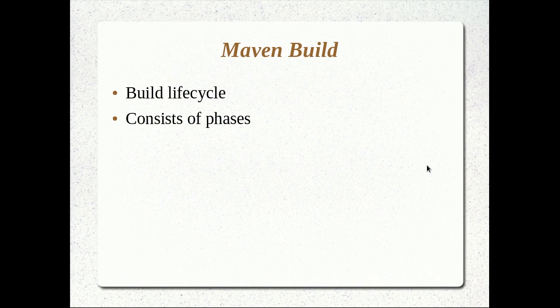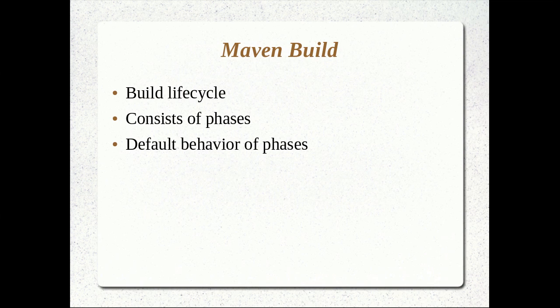Maven has an internal build lifecycle itself. The build lifecycle has been split into different phases. Compile is a build phase and test is a build phase. All these phases together comprise the build lifecycle in Maven, and if you do not explicitly configure it, Maven chooses the default build lifecycle. We actually saw that in action when we did mvn compile or when we did mvn package. Some of the phases have default behavior. Compile takes the code in the main directory and compiles it, assumes it to be application code, and the compile phase assumes the code in the test directory to be test cases.